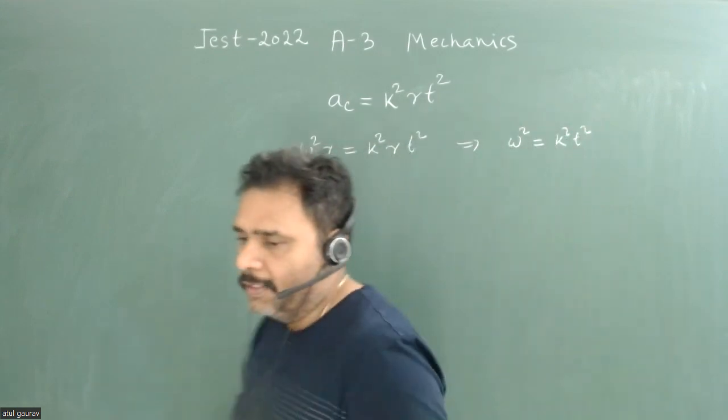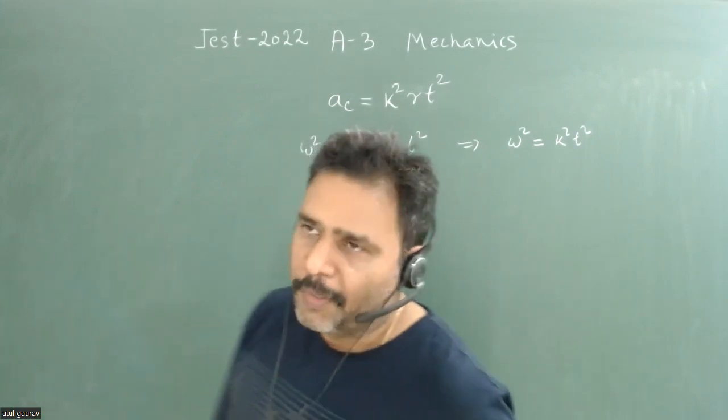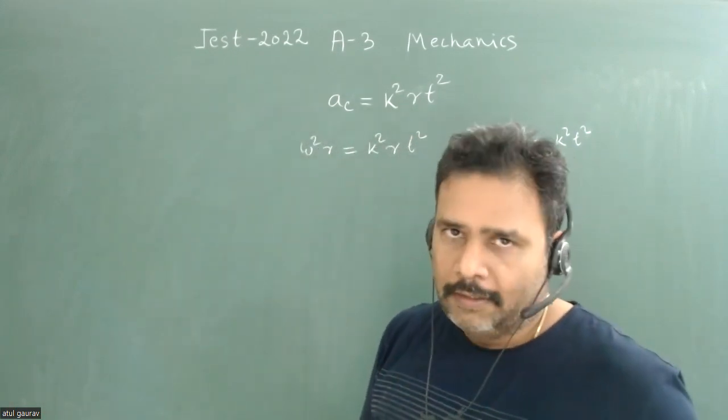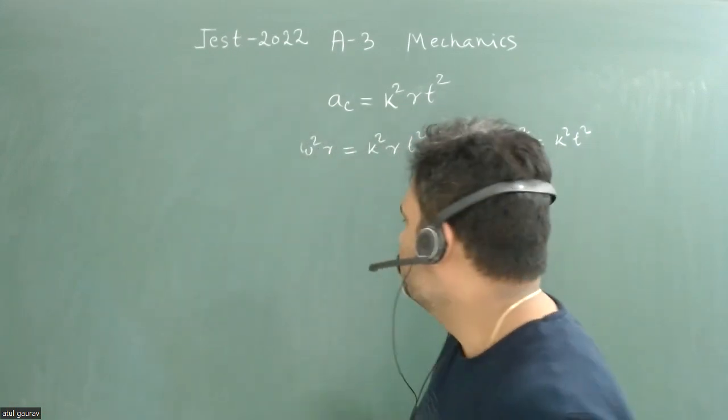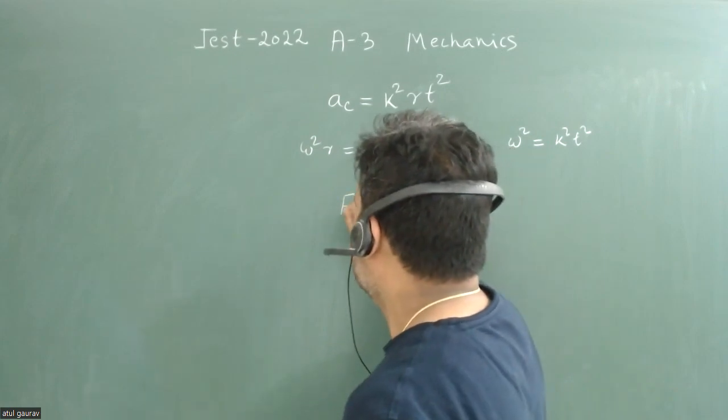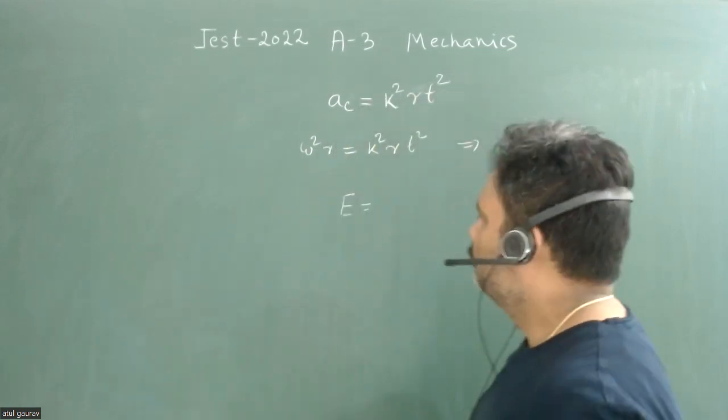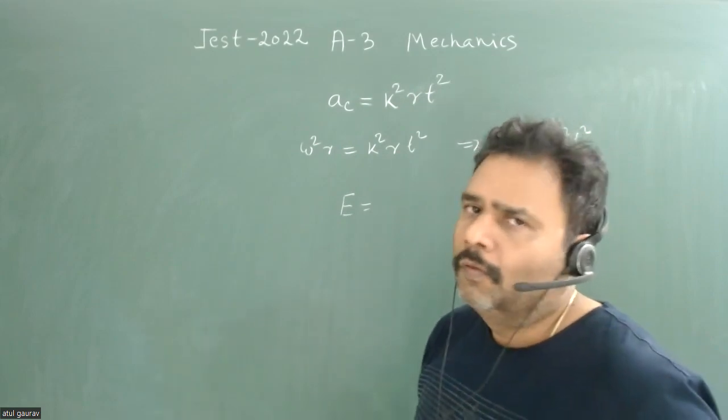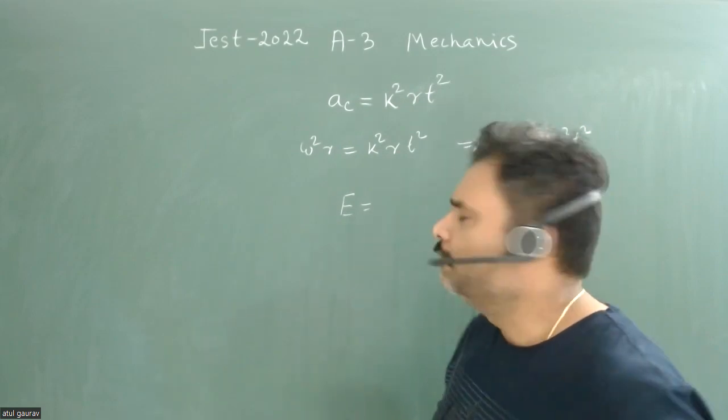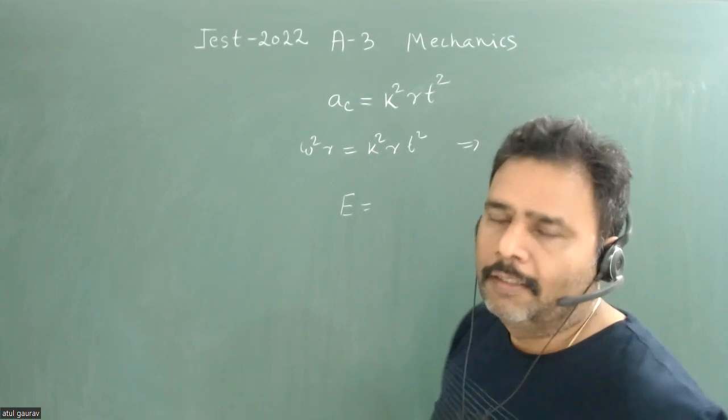We can easily calculate. Now the power is nothing but the rate of change of energy. The expression of energy—there is not any external force acting, so obviously there is not any potential energy.